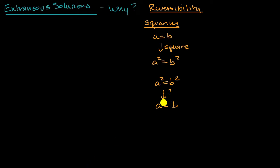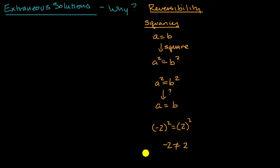What's an example that shows that this is not always the case? Actually, pause the video and try to think about it. Well, negative two squared is indeed equal to two squared, but negative two is not equal to two. So this shows that you can square both sides of an equation and deduce something that is true, but the other way around is not necessarily going to be true.